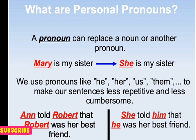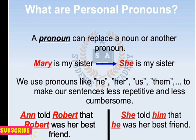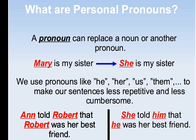We use pronouns like he, she to make our sentences less repetitive and less cumbersome۔ اس noun کی repetition سے بچنے کے لیے اور sentence کو clear کرنے کے لیے ہم لوگ pronoun use کرتے ہیں۔ Next example: 'And told Robert that Robert was her best friend' — اس کو pronoun میں change کریں تو بنے گا 'she told him that he was her best friend'۔